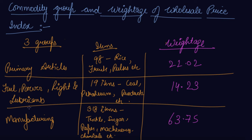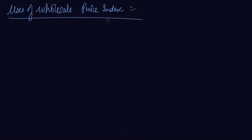Now, the uses of Wholesale Price Index - why do we construct the WPI? Number one is forecasting demand and supply. The WPI is often used to forecast the demand and supply situation in the economy. An increasing WPI is an indication of excess demand, where demand is greater than supply. On the other hand, a decrease in WPI implies deficit demand, where demand is less than supply.